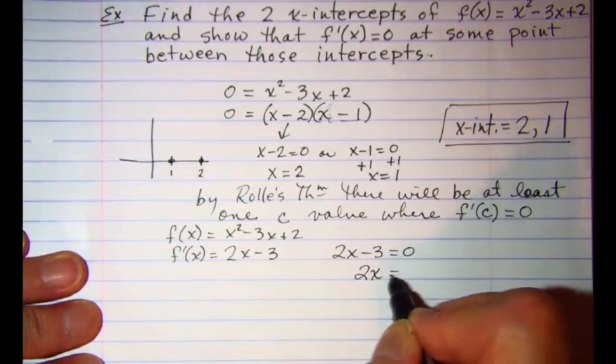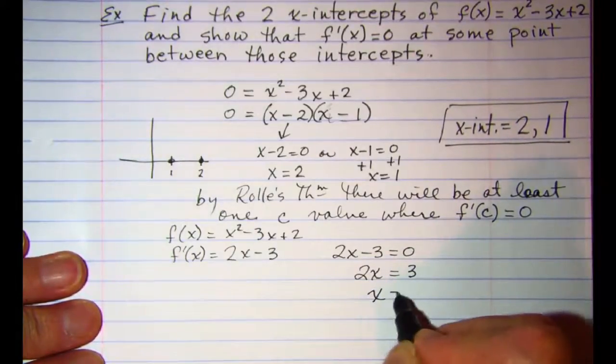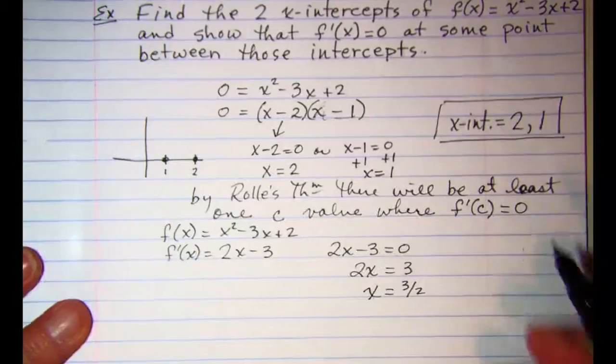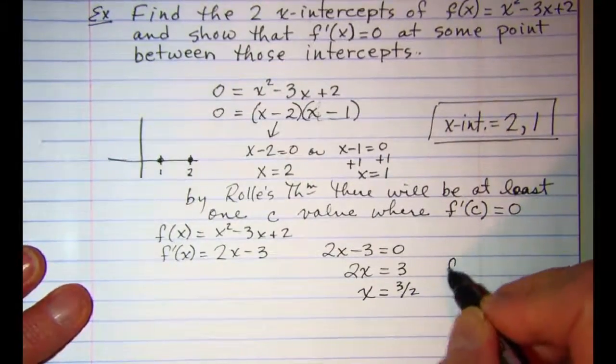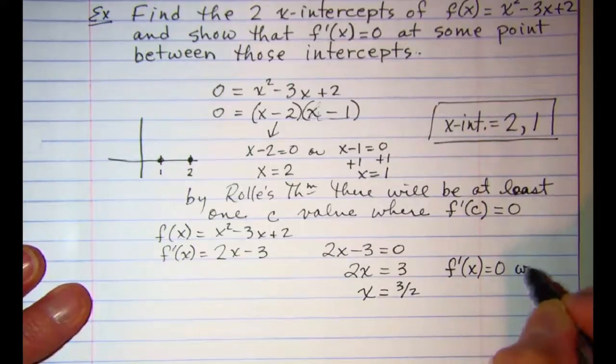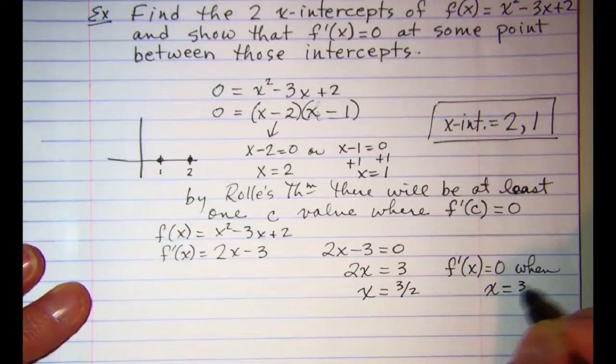2x is equal to three so x is equal to three halves. So then our second part of our problem states f prime of x is equal to zero when x is equal to three halves.